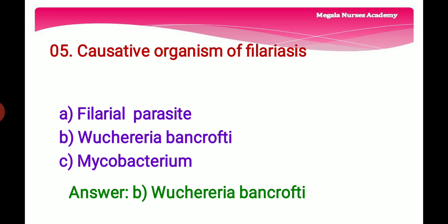Fifth question: The causative organism of filariasis — Option A: filarial parasite, Option B: Wuchereria bancrofti, a filarial nematode and the major cause of lymphatic filariasis, Option C: Mycobacterium, a bacterium that includes causative agents of leprosy and tuberculosis. The right answer is Option B, Wuchereria bancrofti.